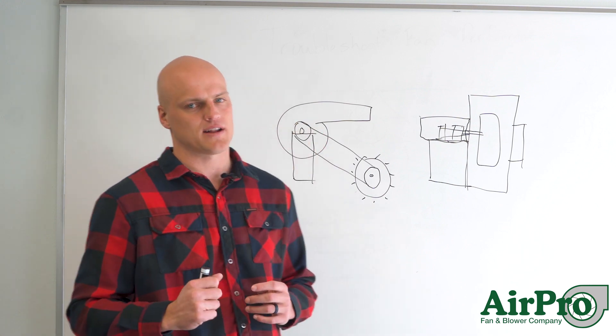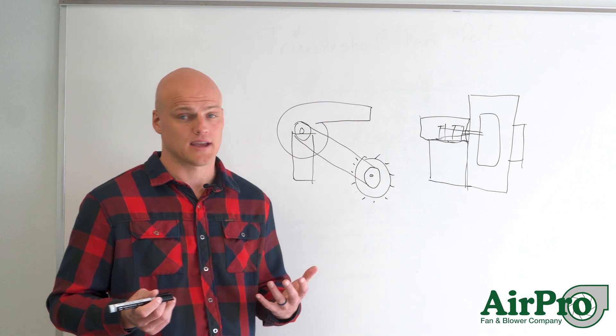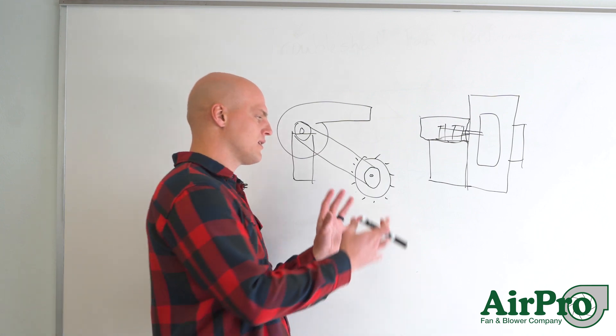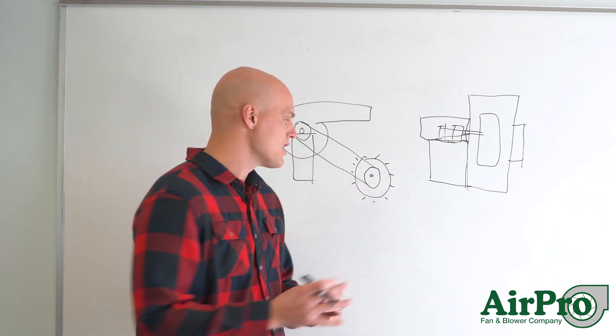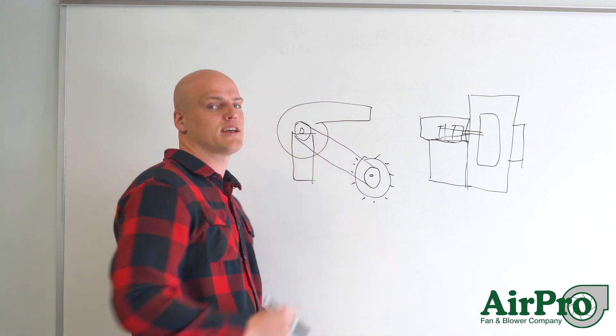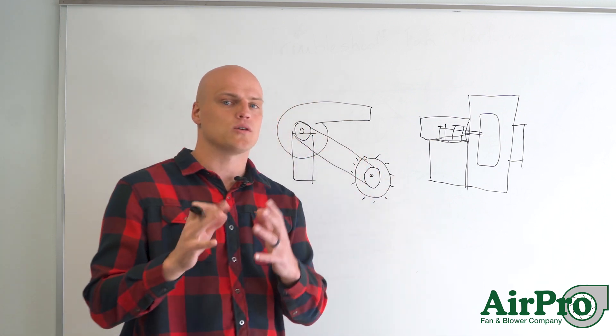Every time you put a V-belt on a fan, you're going to get a loss. And the loss I'm referring to is, you got horsepower coming out from your motor. If you want to run an efficient process, you want all the horsepower being generated by the motor passed directly into the fan wheel. You don't want to lose any of it. V-belts will make you lose some of it.